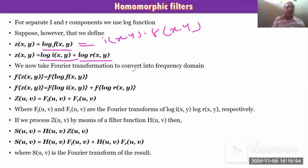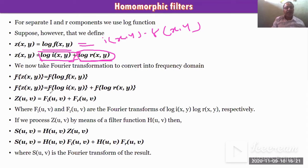Now we can implement a Fourier transformation to convert to the frequency domain. We now have two separate terms. F{z(x,y)} = F{log(f(x,y))}. Then F{z(x,y)} = F{log(i(x,y))} + F{log(r(x,y))}. We can use this because log converts multiplication to addition: log(a×b) = log(a) + log(b), so the Fourier transform of the sum is separable.